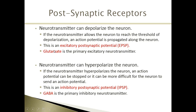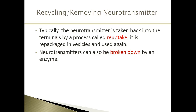Glutamate is the primary excitatory neurotransmitter that depolarizes neurons, and GABA is the primary inhibitory neurotransmitter that hyperpolarizes neurons.